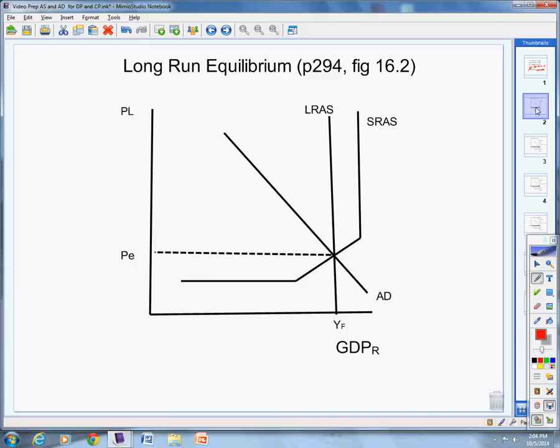Long run equilibrium. Those page numbers are from that same book. We're in long run equilibrium. What's it look like? We have short run aggregate supply. We have aggregate demand. We have long run aggregate supply. We have equilibrium and we have full employment. And we're actually right there. That's referred to as long run equilibrium.